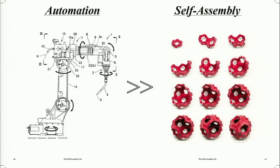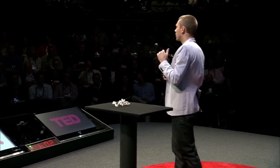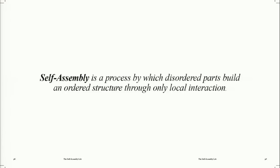So I'd like to propose that we can combine those two worlds — the nanoscale, programmable, adaptive materials world and the built environment. And I don't mean automated machines or smart machines that replace humans, but programmable materials that build themselves. That's called self-assembly, which is a process by which disordered parts build an ordered structure through only local interaction.